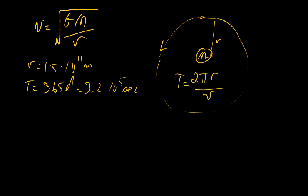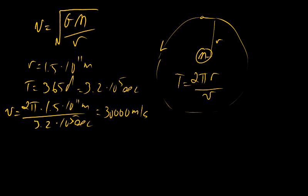We can then find the mass of the Sun. So we start off by finding the speed. It would be just 2π times the radius, 1.5 times 10 to the 11 meters, all over 3.2 times 10 to the 7 seconds.